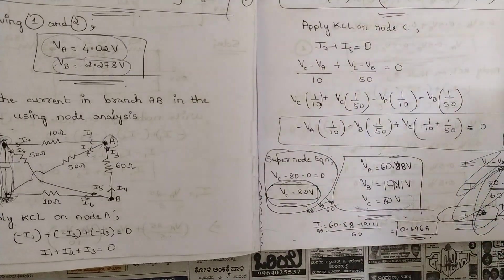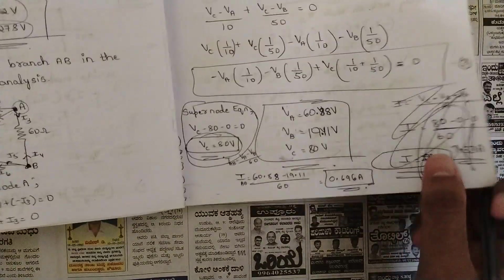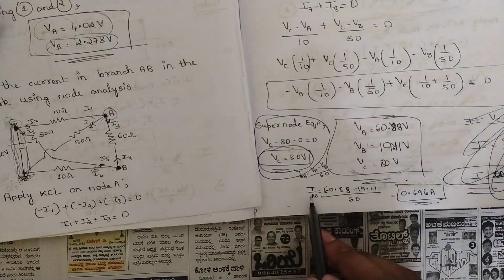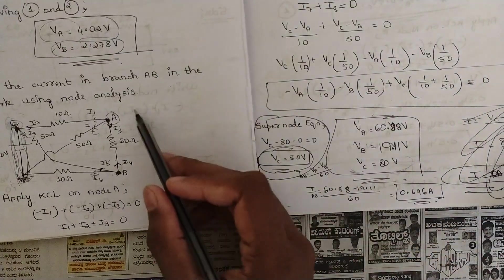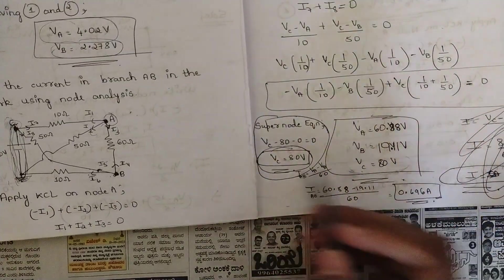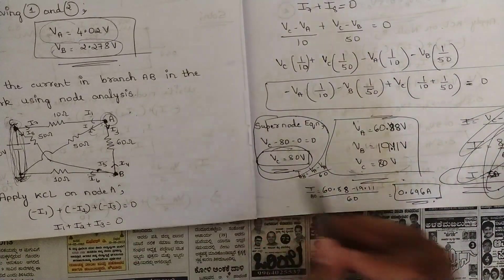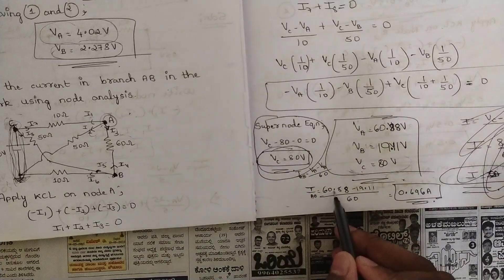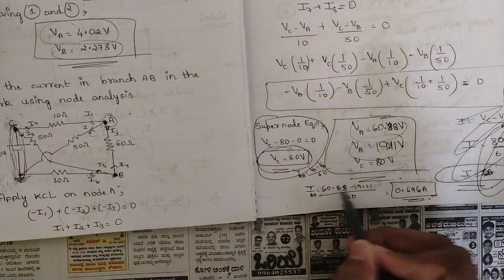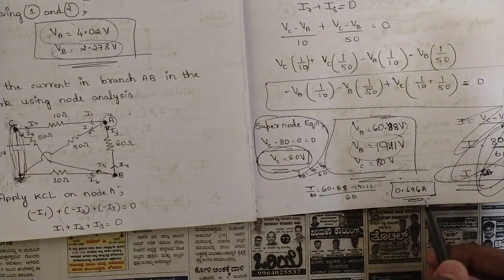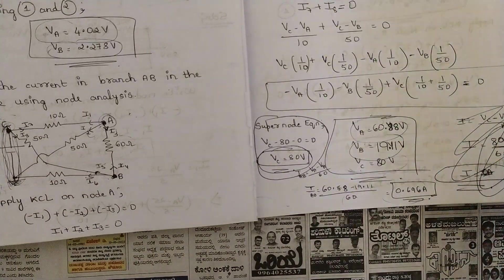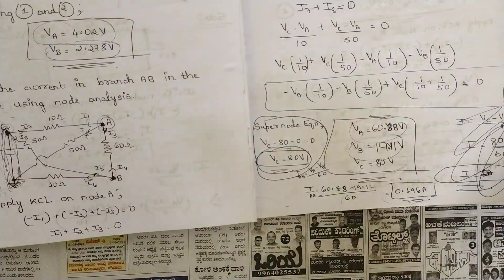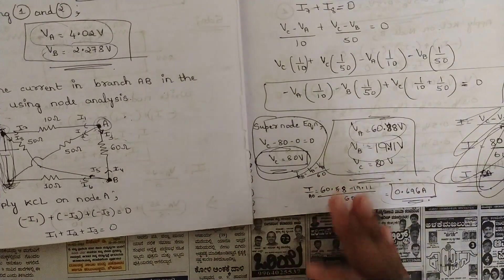We need to find the current in branch AB, so I_AB = (Va - Vb) / 60 ohms. Substituting Va and Vb, we get the branch current as 0.696 amperes. This confirms the super node concept is clear.